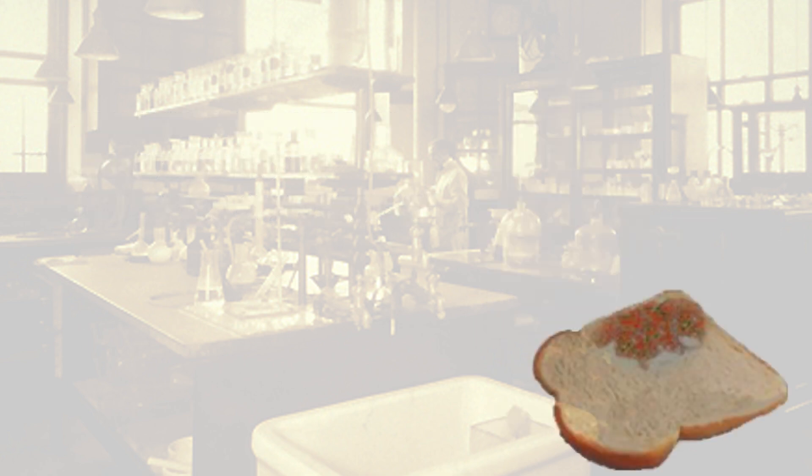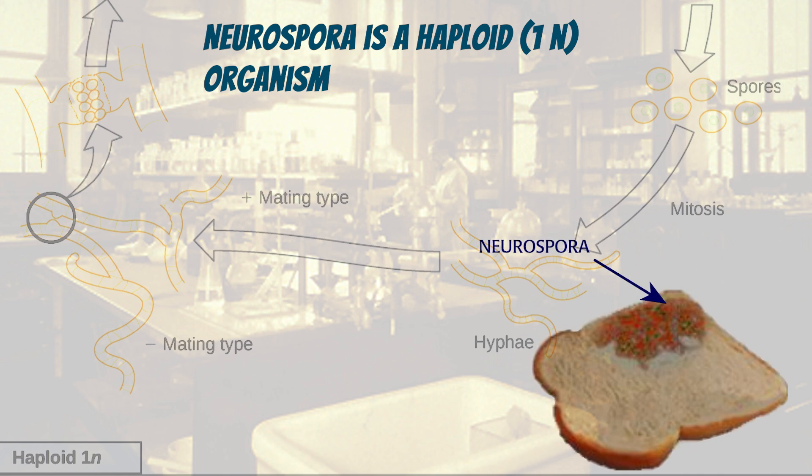For most of its life cycle, Neurospora is a haploid organism, which means that there is only one copy of each gene. So they didn't worry about dominant and recessive alleles as Mendel had.